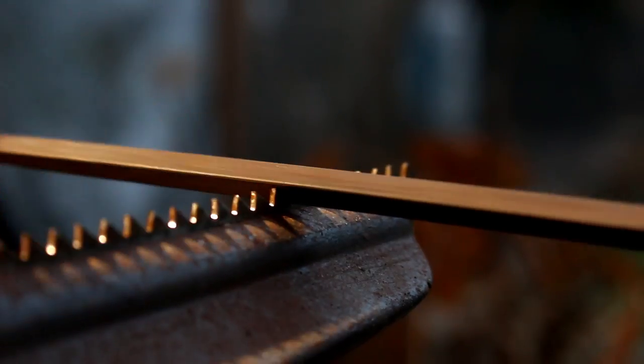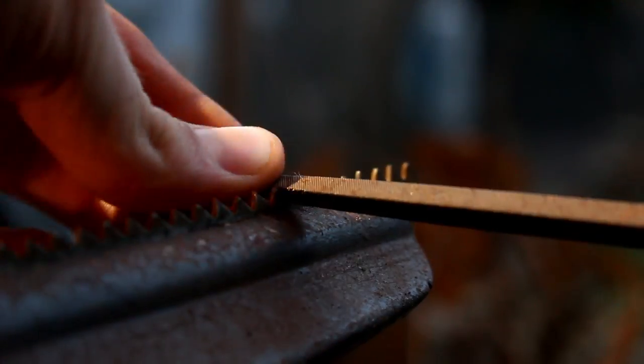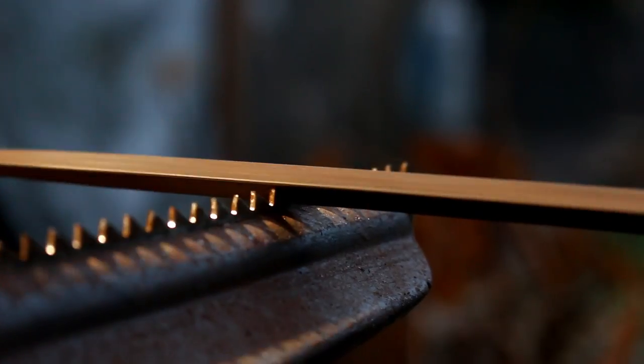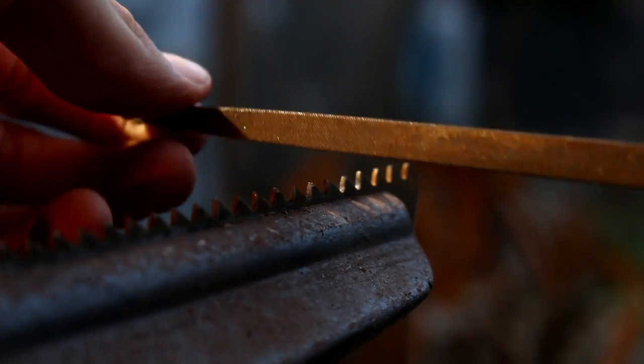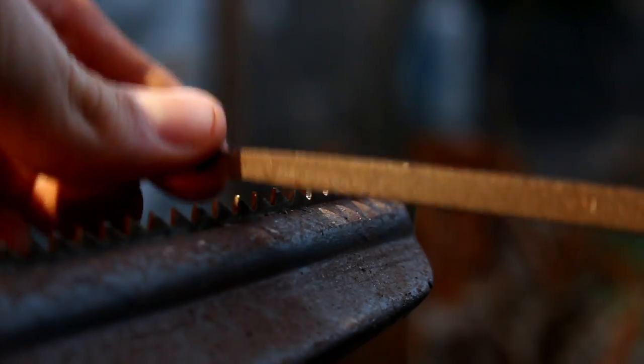As you're filing the saw, just make sure you stay at a 90 and a 60 degree angle. You don't want some teeth to be flat, some to be 90. It'll just mess up the saw.